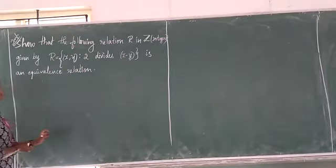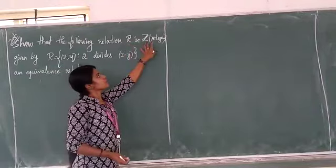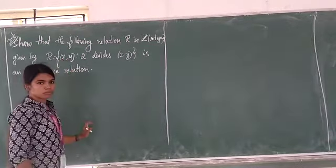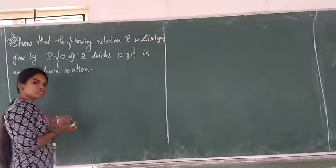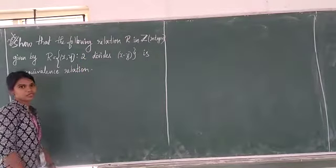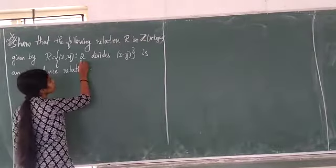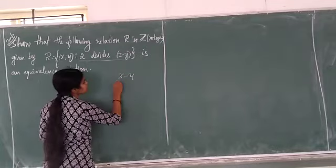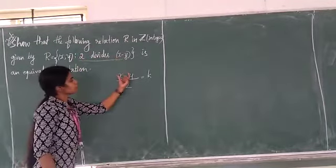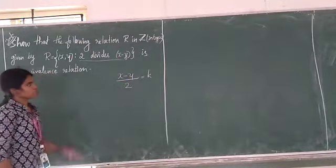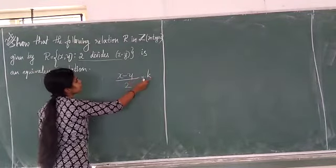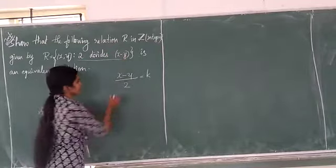Show that the following relation R in Z — Z is nothing but the set of integers. The relation R is defined on the set of integers. The elements are ordered pairs (X, Y) such that 2 divides X minus Y. What do we mean by 2 divides X minus Y? That means when you divide X minus Y by 2, you should get an integer.